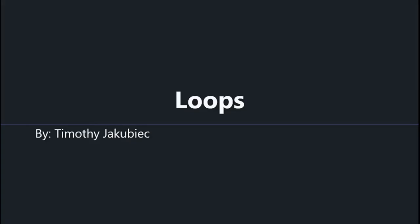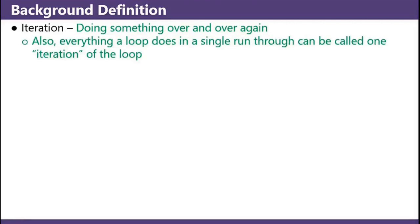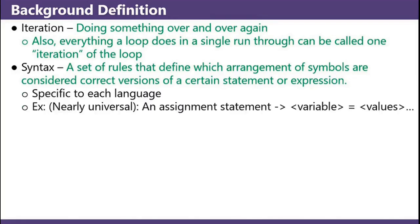Hello and welcome back to Jakubication. This is the next video of Chapter Zero entitled Loops. A background definition: iteration is doing something over and over again. Also, everything a loop does in a single run through can be called one iteration of the loop. Another definition: syntax is a set of rules that define which arrangement of symbols are considered correct versions of a certain statement or expression — specific to each language. An assignment statement has a variable and then an optional number of values on the right.